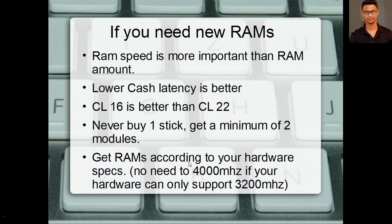Get RAMs according to your hardware specifications. If your motherboard and processor can only go up to 3200MHz, there's no point wasting money getting 4000MHz RAM, because you're never going to achieve that speed. So those are a few key points to take note of.